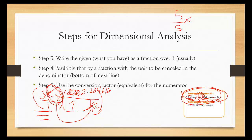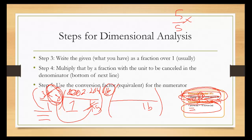Now I have pounds on top. I'm going to do that process again — pounds on top means I put pounds on the bottom of the next fraction. Where you're going from is always on the bottom; where you're going to is always on the top. I look at my conversion factor, find the word pound, note it has 1, and it equals 16 ounces. So 16 ounces goes on top. Because pounds divided by pounds equals 1, they cancel out.